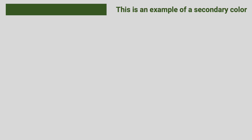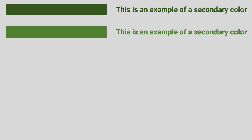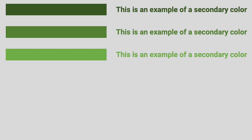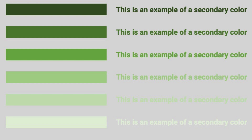Here's an example of good to bad contrast between the primary and secondary colors. The secondary color is changing from dark to light. As you can see, the lighter the secondary color gets, the harder it is to see against the primary color. Also, while the block of shapes are easier to see, the text is much harder to read. For a slide deck, legibility of text is paramount.